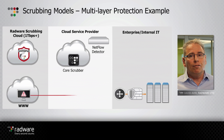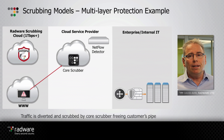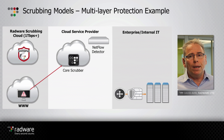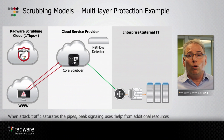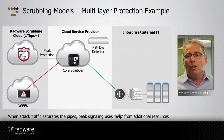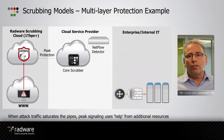In cases where volumetric attacks are also hitting the scrubbing center itself, we have developed a peak protection technology. When sensing a very high-volume attack, it redirects traffic into a third party or our Radware scrubbing cloud, which today provides more than one terabit per second of scrubbing capacity. The traffic is cleaned up and redirected back to the service provider, and from there to the end customer.